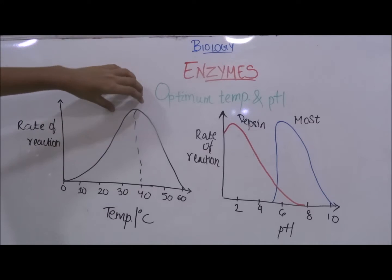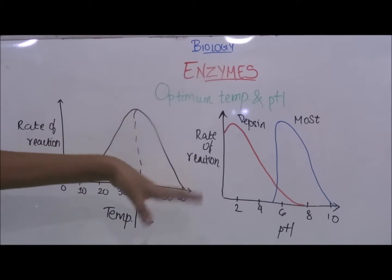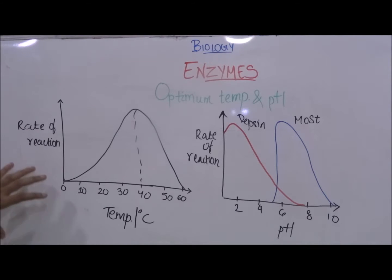So according to this graph the rate of reaction continuously increases until it reaches its highest point that is around 40 degrees Celsius. And it then continuously decreases till about 60 degrees Celsius when the rate of reaction reaches zero.